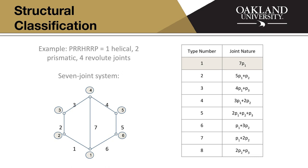So Freudenstein and his teaching assistant identified several different combinations of a joint. So they only took a seven-joint system. For example, this Watt six-bar mechanism is a seven-joint system. And they're like, okay, how many variants of this six-bar seven-joint system can we make? So an example would be a PRRHRRP, a seven-joint system, which means that there's one helical, or a screw, there's two prismatic joints, and there's four revolute joints. And then each of those moves the mechanism around in a different way.